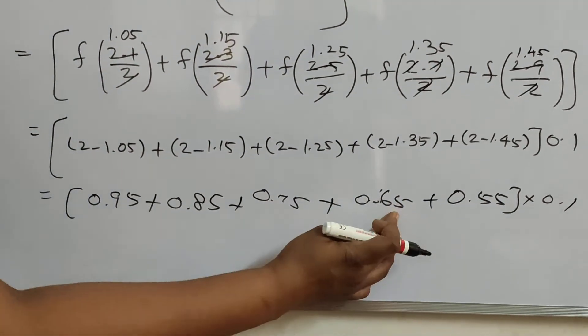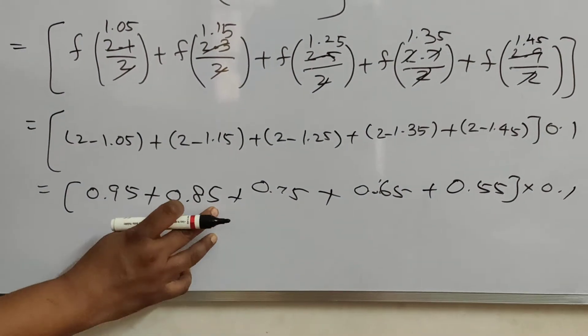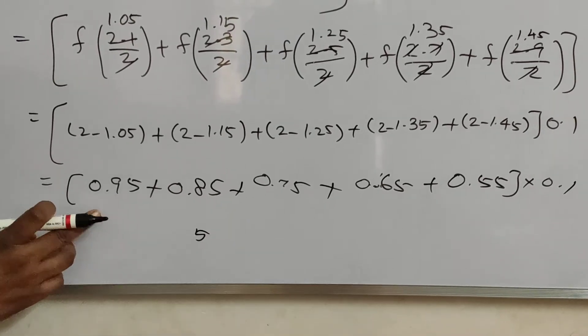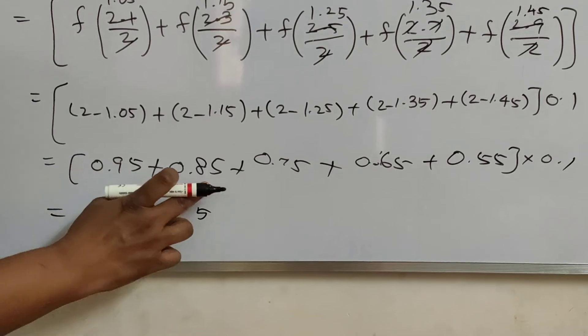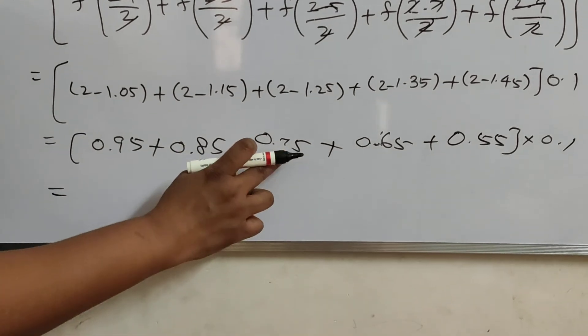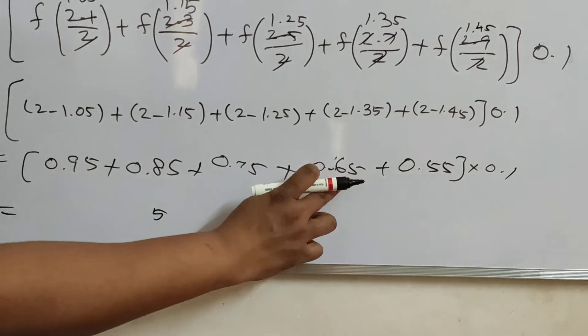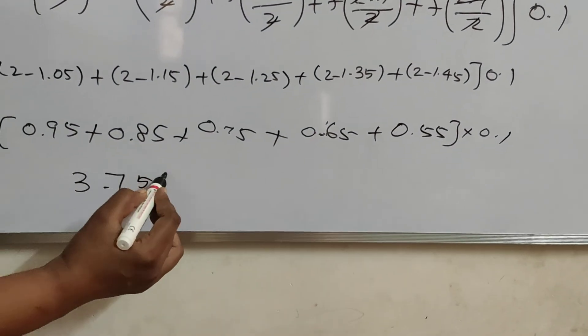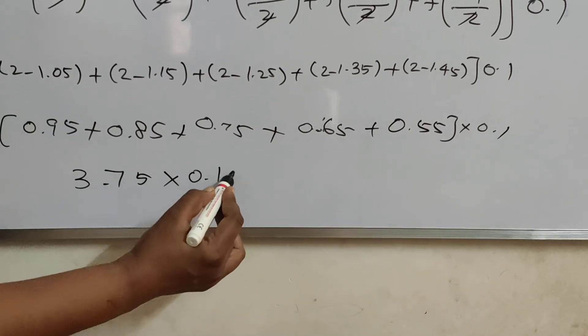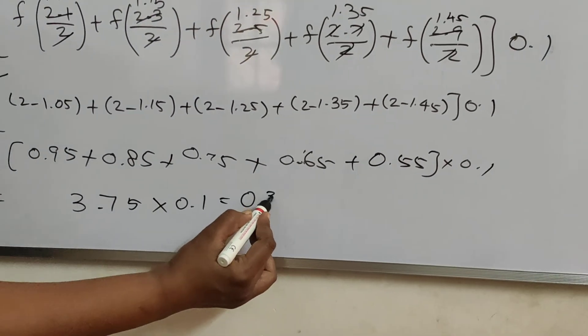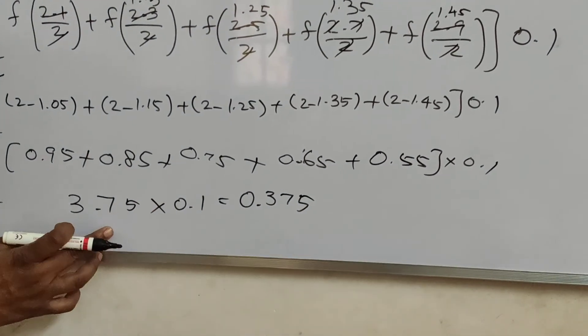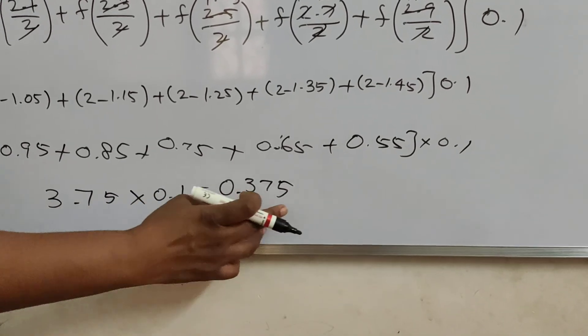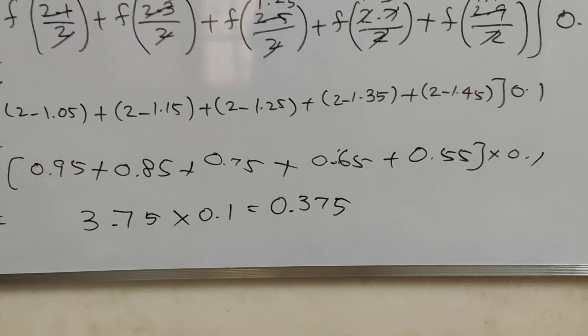Adding: 0.95 plus 0.85 plus 0.75 plus 0.65 plus 0.55 equals 3.75 into 0.1, which equals 0.375.